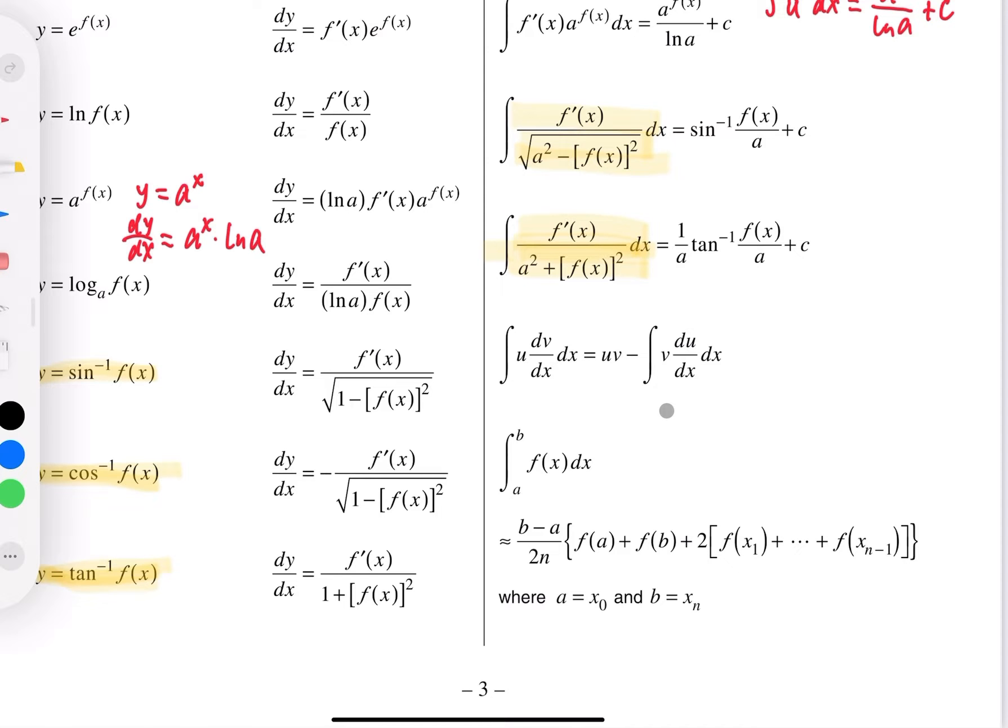And then the next one belongs to extension two. We call it integration by parts. So I'll highlight them in blue. Integration by parts. That belongs to extension two.